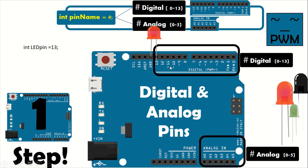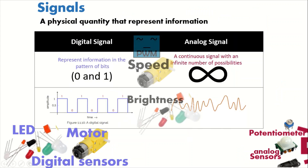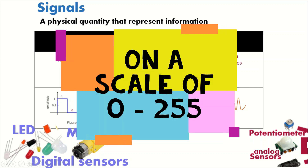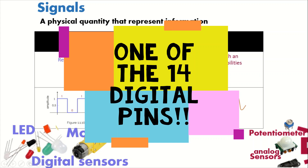If you want to control the speed of a motor or vary the brightness of an LED, we use PWM — Pulse Width Modulation. This is a technique where a digital signal is converted to an analog-like signal to vary the output. To control motor speed or LED brightness, you connect to the PWM pins; if you only want to turn them on or off, connect to the regular digital pins.